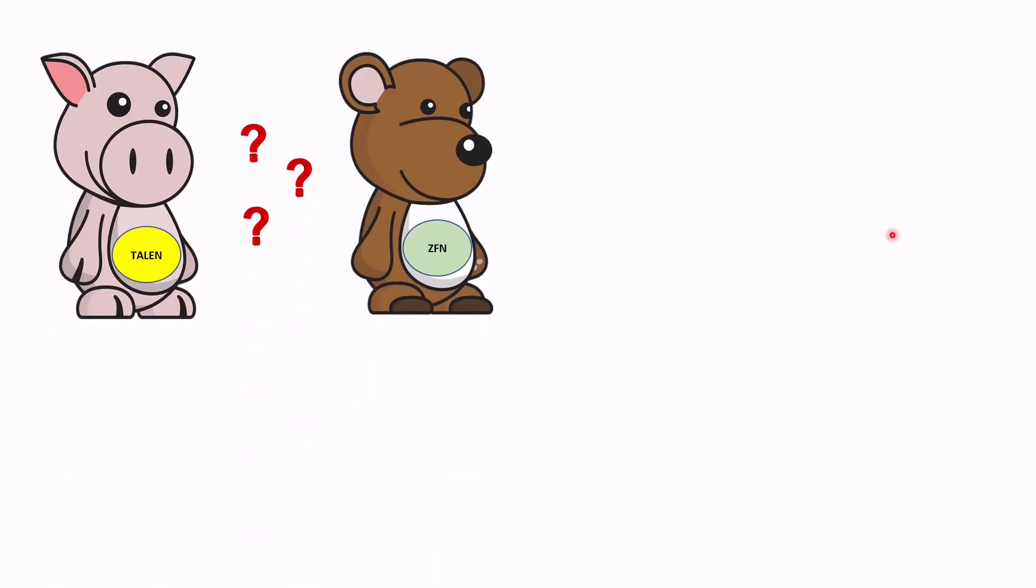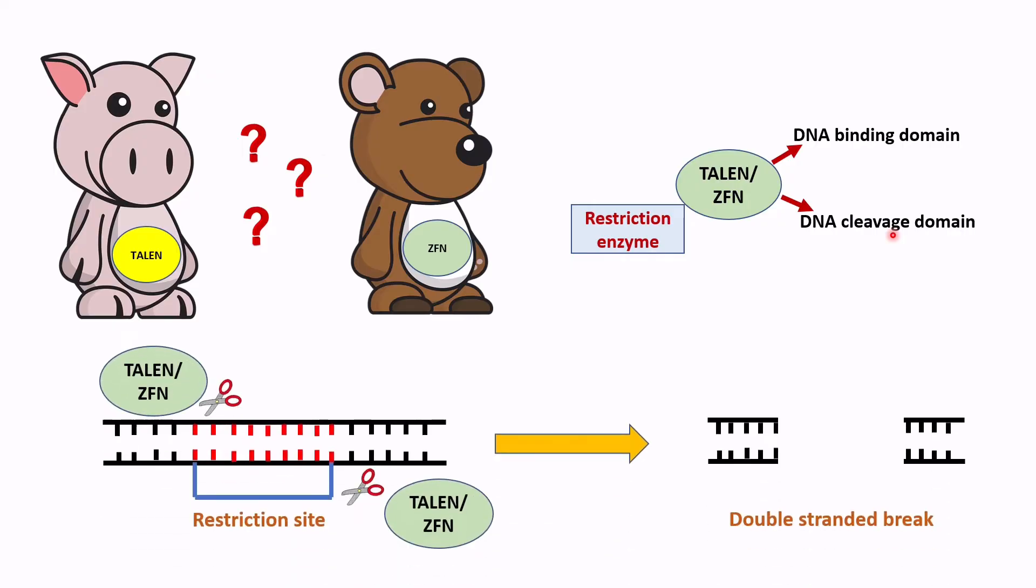We have seen in our previous lectures that both TALEN and ZFN work in a similar manner. So what are the actual differences? Both of them are restriction enzymes. They bind and cleave a specific site in DNA. But the way they bind DNA is actually different.